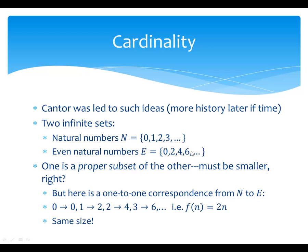A lot of our intuition would say it must be a smaller set. If there is any notion of comparing different kinds of infinity, maybe E is really smaller than N. But if we accept the idea of the one-to-one correspondence method for saying when two sets are the same size, we can show that they're actually the same size. Here's a very simple one-to-one correspondence going from the natural numbers to the even numbers: just doubling. F(n) = 2n. Double 0, you get 0; double 1, you get 2; double 2, you get 4; double 3, you get 6.